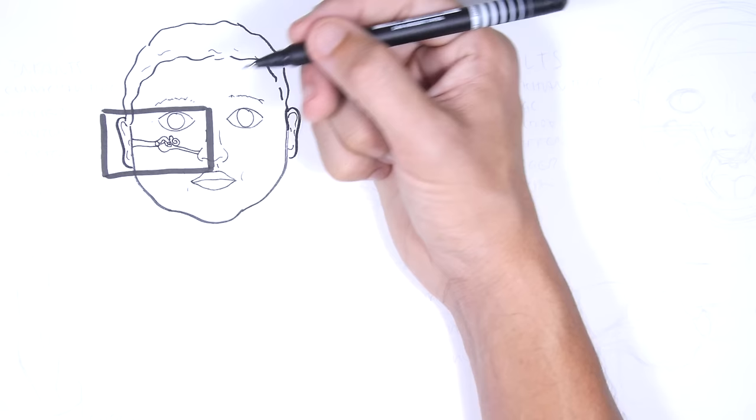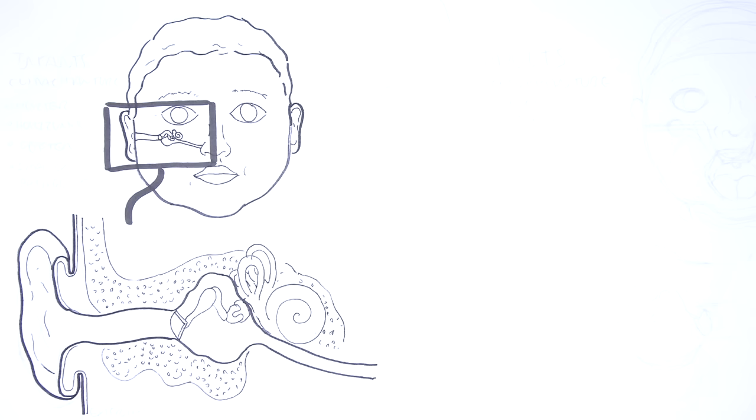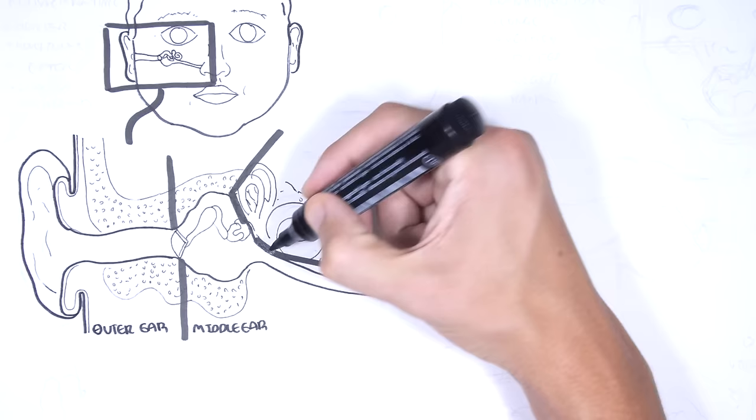The majority of children will be diagnosed with at least one episode of otitis media. The ear plays a key role in hearing. The ear is divided into three parts, the inner, middle, and outer ear.